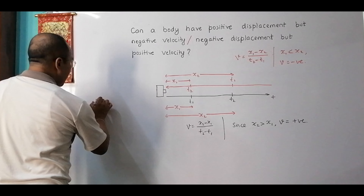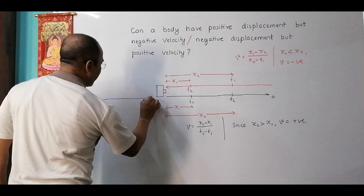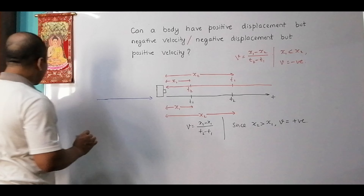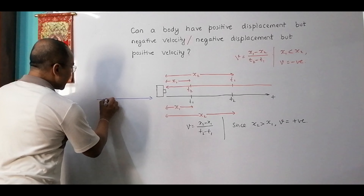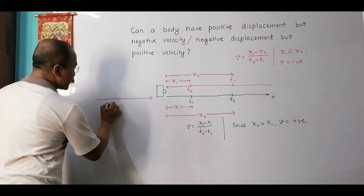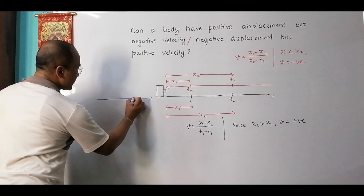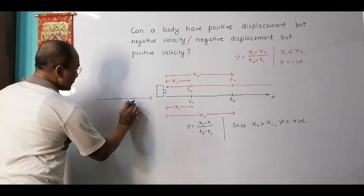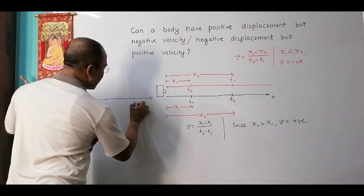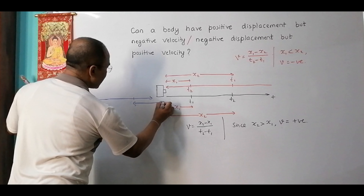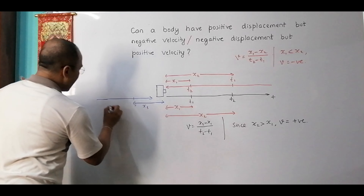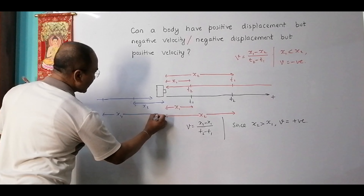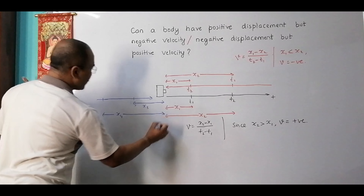This answers the first question. For v to be positive, the final displacement must be greater than the initial displacement. For v to be negative, the final displacement must be less than the initial displacement. That is when v will be negative.